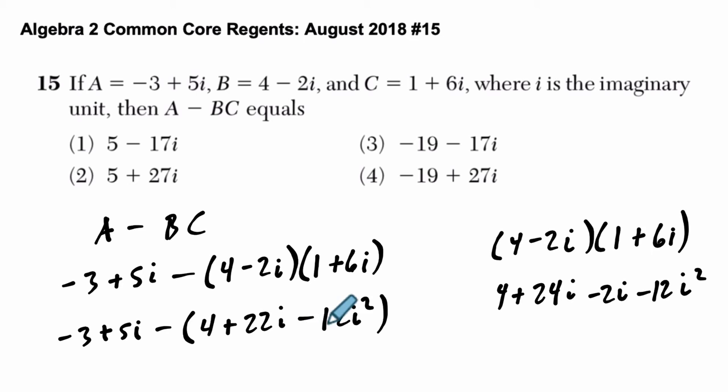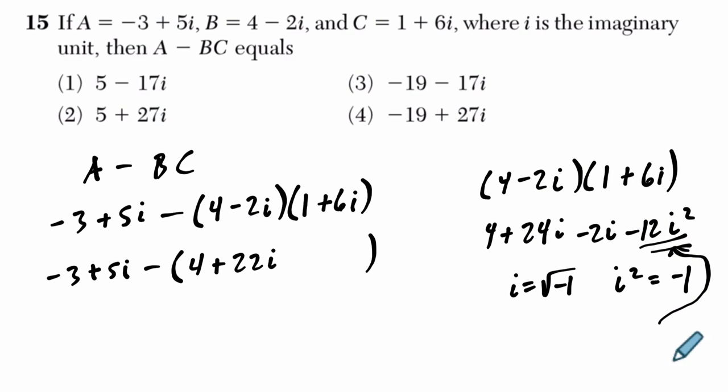Now, I should actually not write that last term yet because often a source of confusion is right here. This, i squared, if i equals the square root of negative 1, i squared, you square both sides, get rid of the square root, is just negative 1. So that means this term right here is what? It's negative 12 times negative 1 or plus 12, right? This is plus 12. So we reverse that sign.